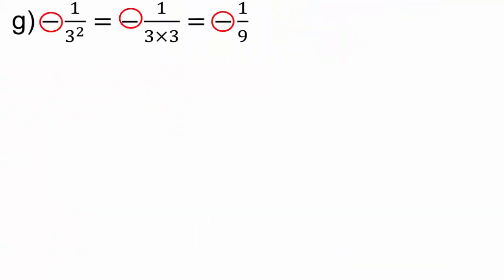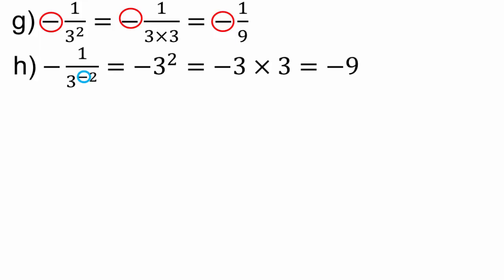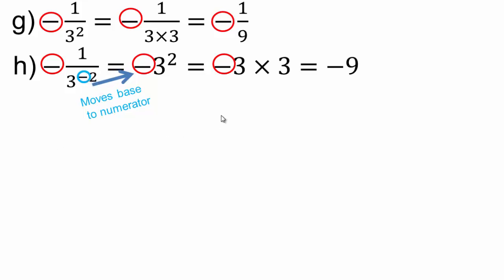That negative sign stays and at the bottom you expand. Now the negative number exponent is on the denominator, so things are going to switch and go to the top. This negative sign has nothing to do with the negative sign of the exponent. Please make sure that you understand that.